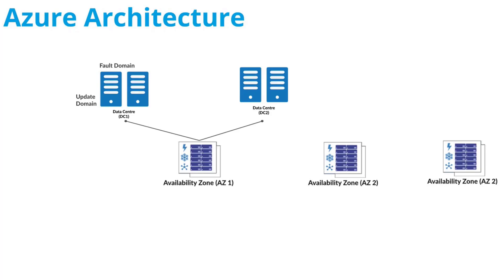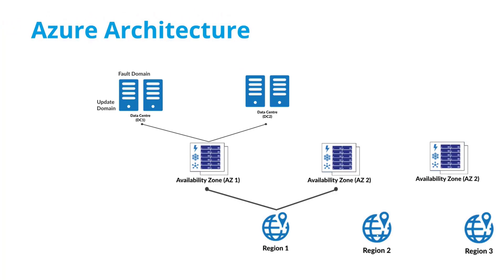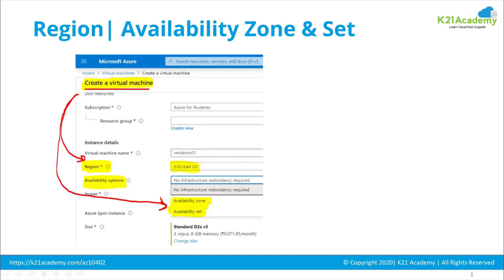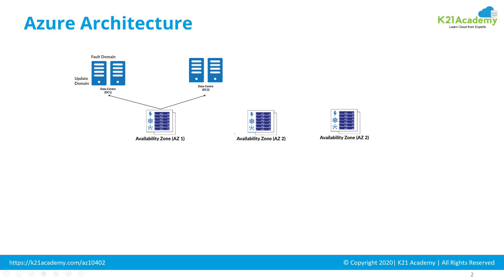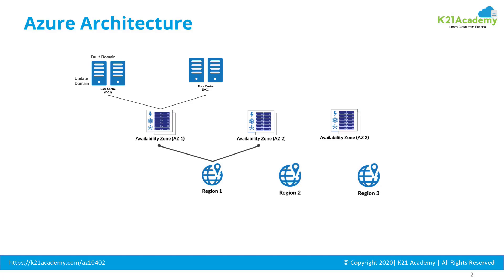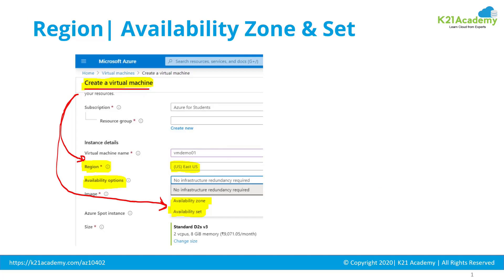Multiple data centers make up an availability zone, and within a region you can have up to three availability zones. When you select machines to be across availability zones, Microsoft places them in different availability zones — meaning different data centers. One important thing to understand is that not every Azure region has multiple availability zones. So if you have a region with only a single availability zone, you will not get the option to select availability zones.